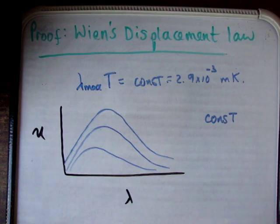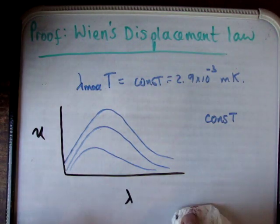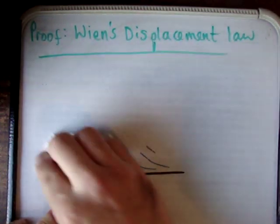Because everything, the product stays constant. And if you change one of the variables, then all you're really doing is shifting the shape of the curve. So that's what Wien's displacement law is.